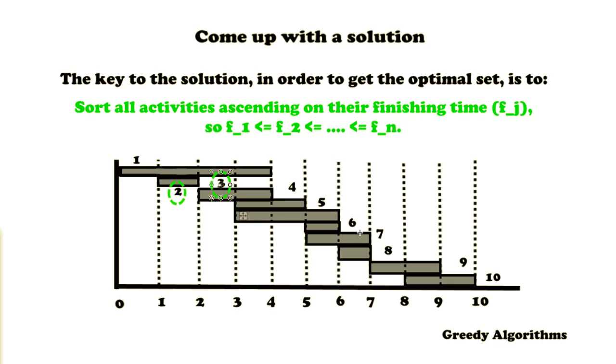5 neither. 6 is compatible with 3 because its finishing time is smaller than the starting time of 6. 7 is not compatible with 6. 8 is compatible. And then we have 9, which is also compatible. And 10 is not compatible because the starting time is smaller than the finishing time of 9. So we have a set of the activities 2, 3, 6, 8 and 9.